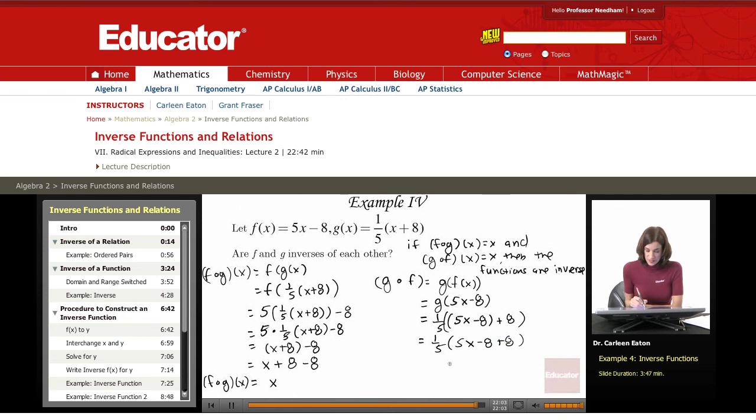That's (1/5). I have -8 and +8, so those become 0. It's just (1/5) times 5x. The 5s cancel out, so that equals x.